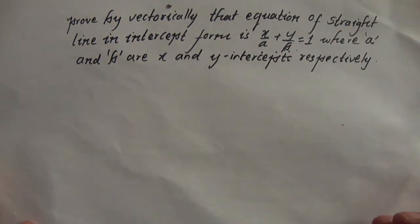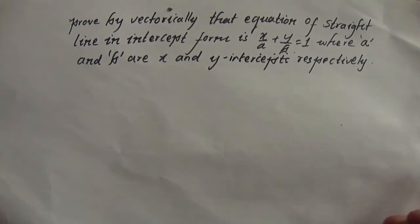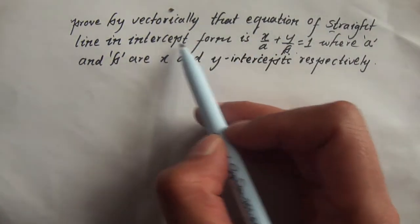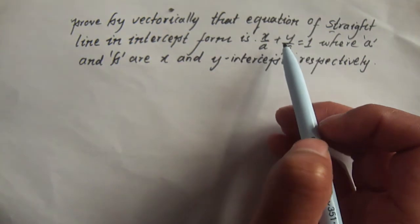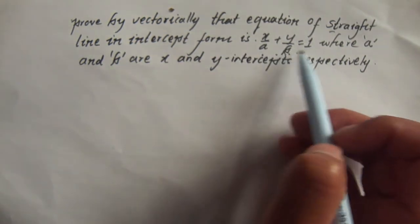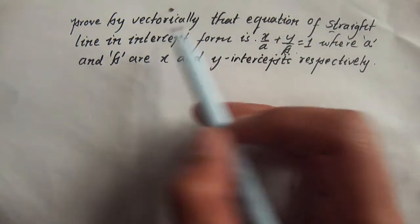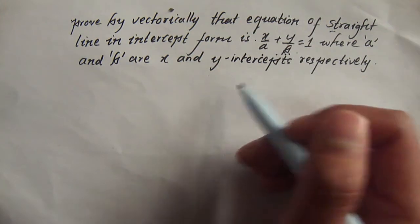Hello everyone, this is Bikram and today I am proving the straight line equation — intercept form: x by a plus y by b is equal to 1. This is a vector method that I will prove to you.